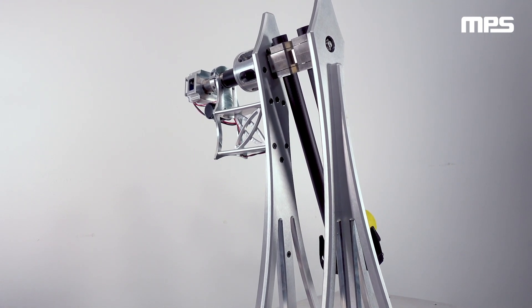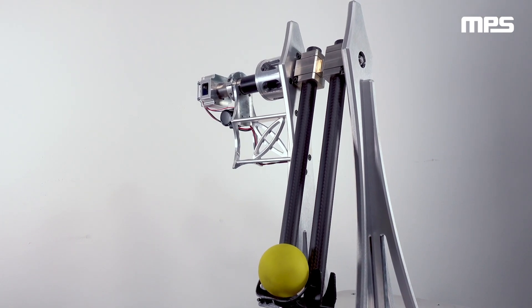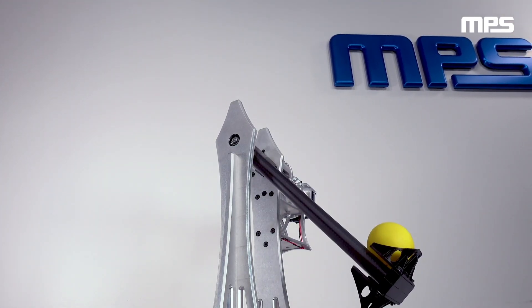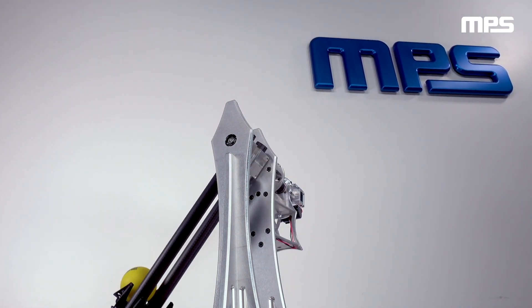The margin for error in this system is incredibly small and the highly accurate position control made possible by the MPS smart motor module allows this device to reliably throw and catch a ball back and forth without any features to track the ball in flight.